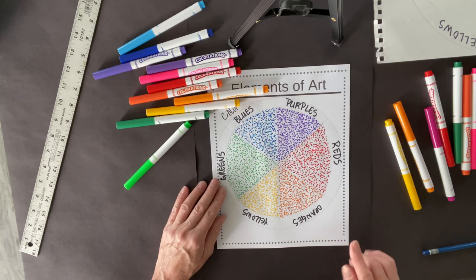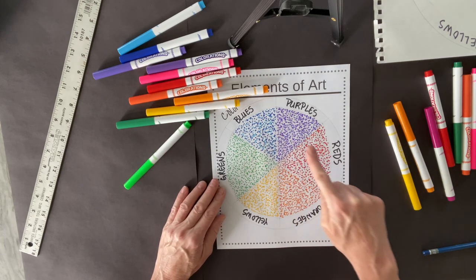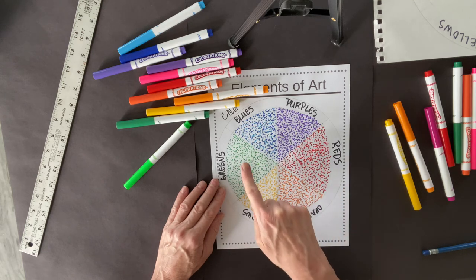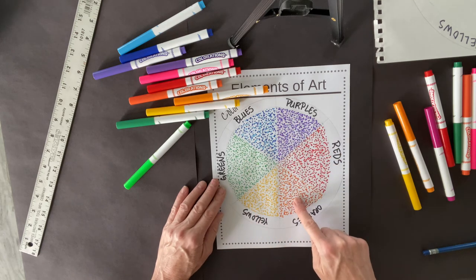So what you see here are my primary colors: blue, red, yellow, and my secondary colors: green, purple, and orange.